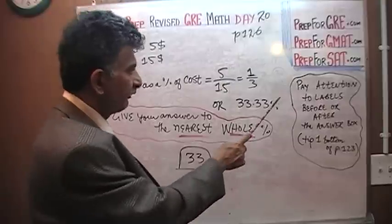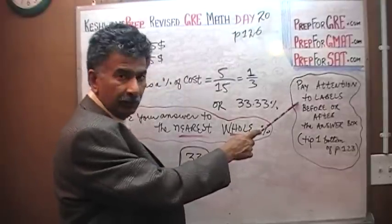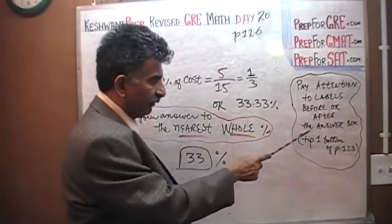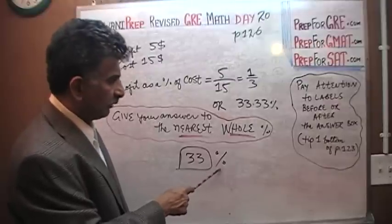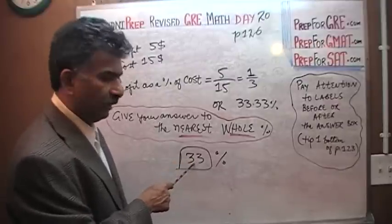I am going to read to you. It says, pay attention to the labels before or after the answer box. We have a label outside, after the box. This is percentage and this is a whole number. So we just have to enter 33.